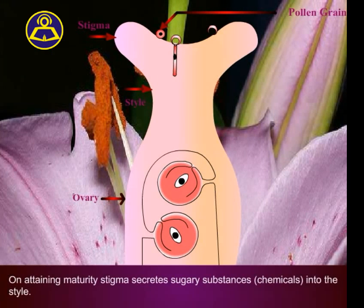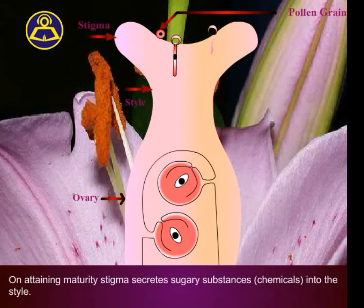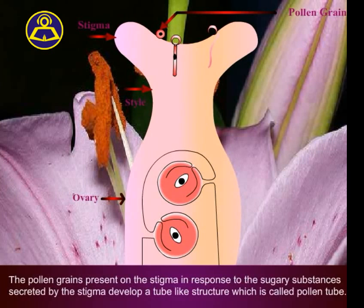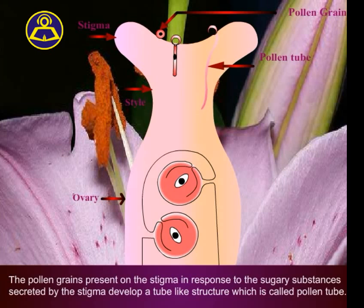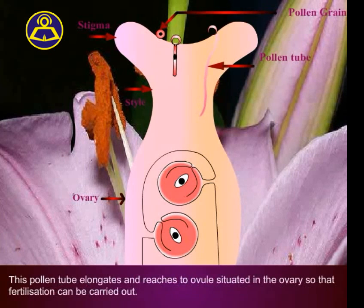On attaining maturity, the stigma secretes sugary substances or chemicals into the style. The pollen grains present on the stigma, in response to these sugary substances, develop a tube-like structure called the pollen tube.